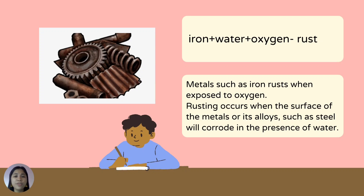Rusting occurs when the surface of metals or their alloys, such as steel, corrode in the presence of water. Water is a compound made up of oxygen and hydrogen. The presence of oxygen causes rusting of iron. The process of rusting is a combustion reaction similar to the creation of fire. If iron is left in contact with oxygen, it will react to form rust. Rusting is the common term for corrosion of iron and its alloys.